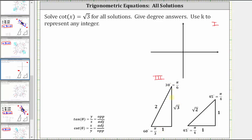So now we sketch a reference angle of 30 degrees in the first and third quadrants. In the first quadrant, the opposite leg is one, the hypotenuse is two, and the adjacent leg is square root of three. In the third quadrant, the opposite leg is negative one, the hypotenuse is two, and the adjacent leg is negative square root of three. Notice using both reference triangles, the ratio of the adjacent side to the opposite side is positive square root of three.